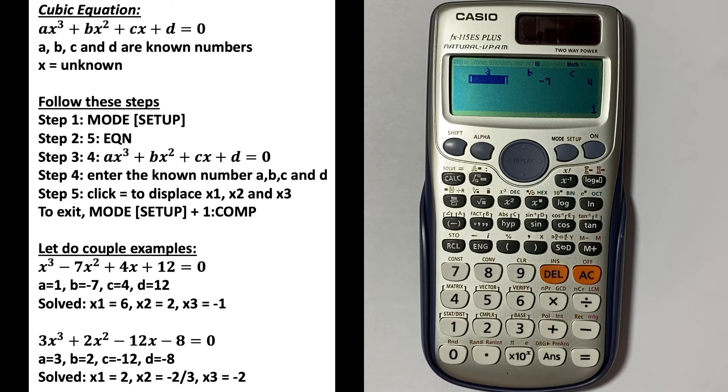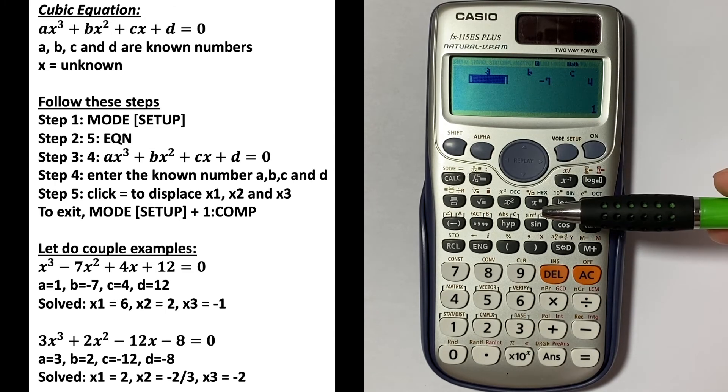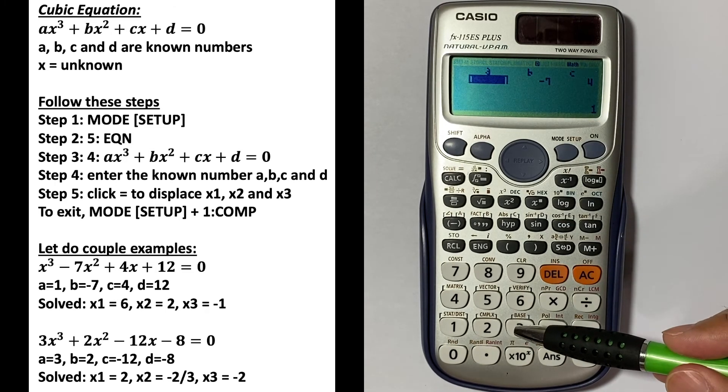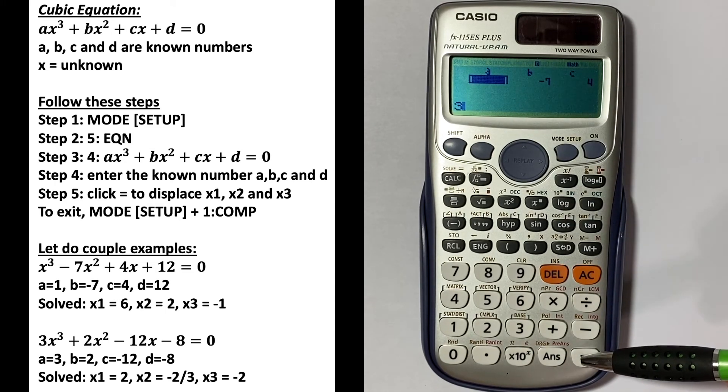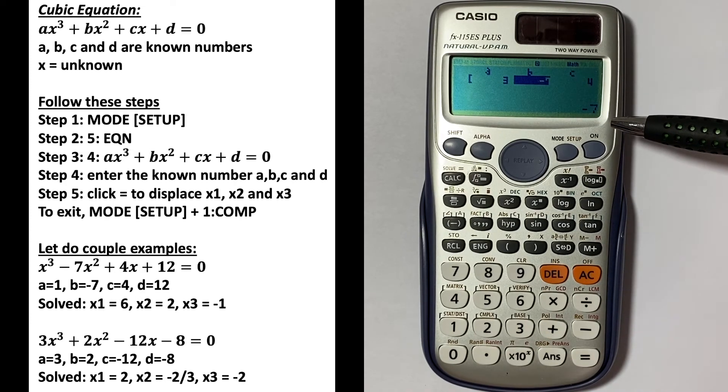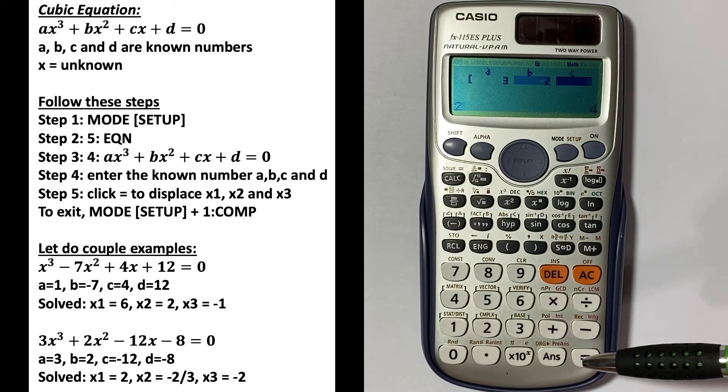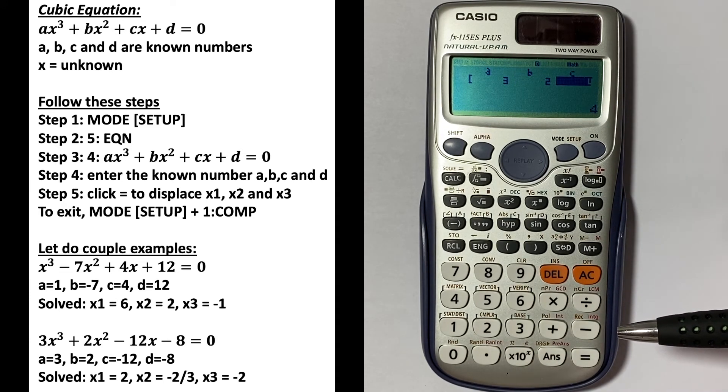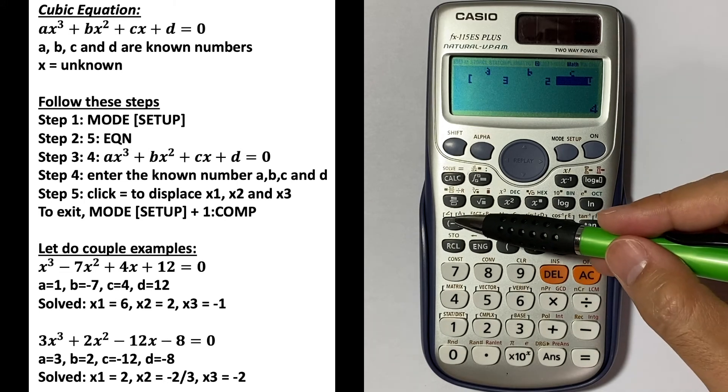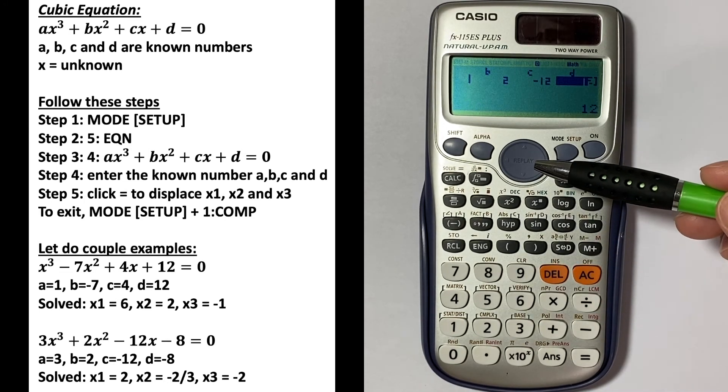Here a = 3, so this will replace the a right here. And b, previously we had -7, so now will be 2. Click 2, and c will be -12, and d will be -8.